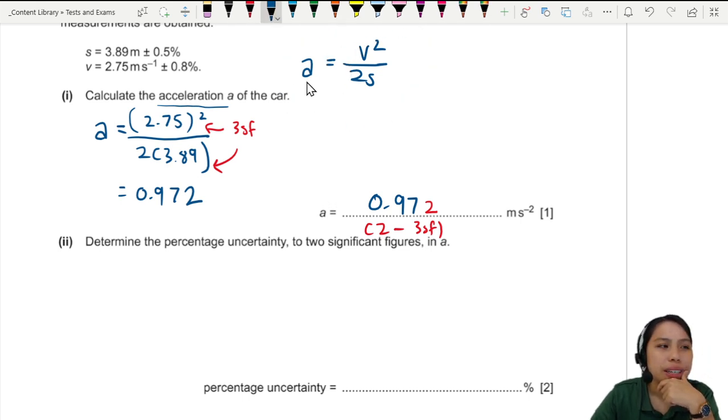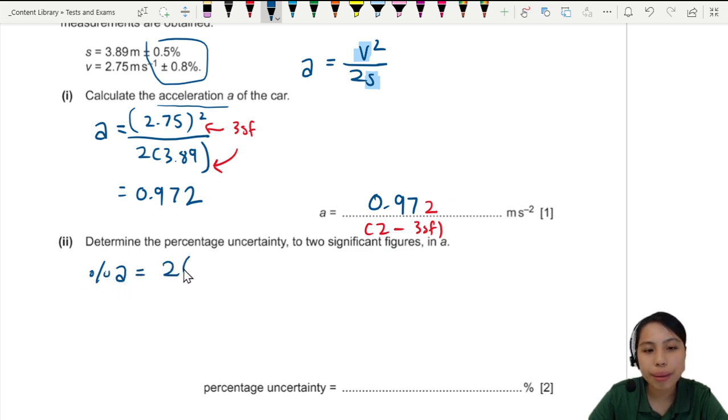Go back to the equation just now, this one. There is an error in V. There's also an error in S. But you cannot just add them together. Because there's 2 times of V. Now, when the rule is, when let's say V and S, if they are multiplied or divided together, you can add their percentage. Percentage. But with a special rule. So, when you find the percentage uncertainty in A, you need 2 times the percentage uncertainty in V, because it's squared. And, uncertainty in S.